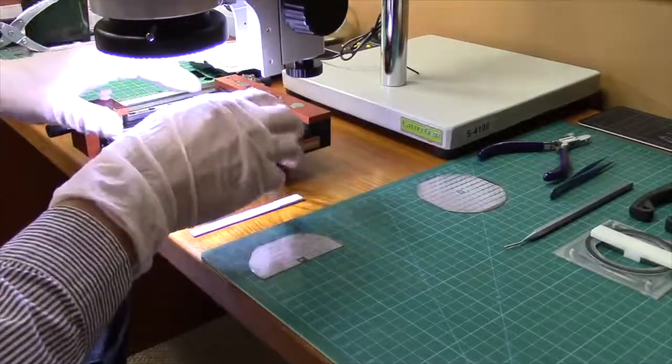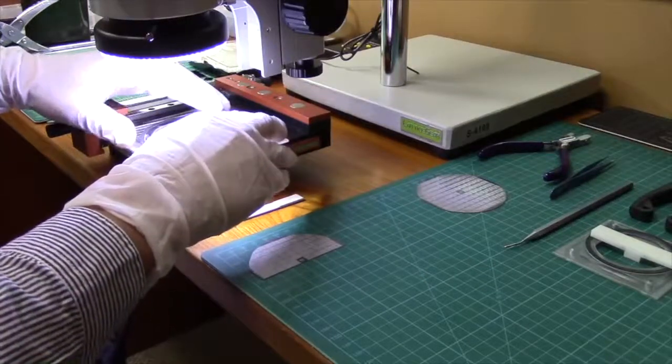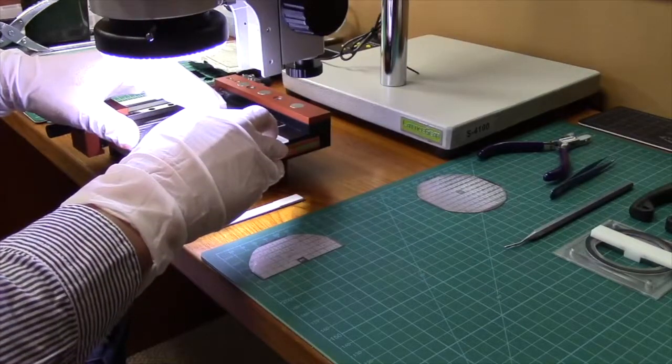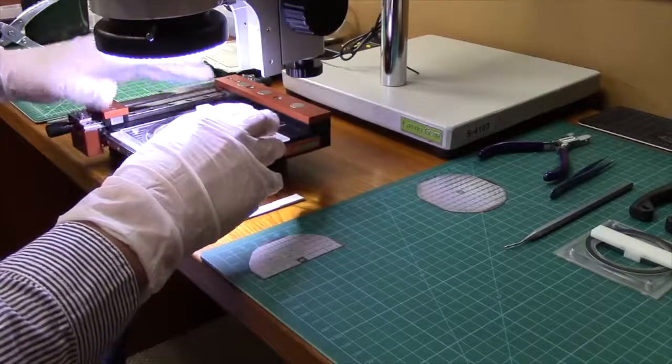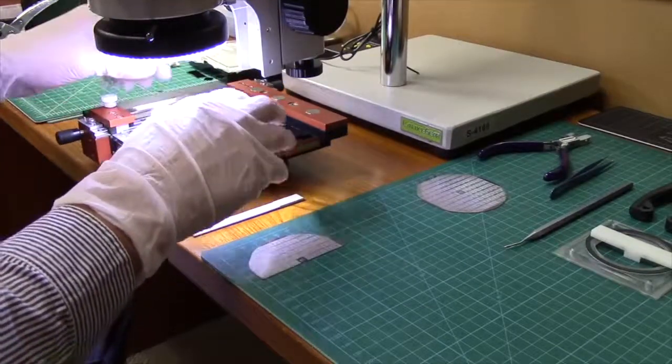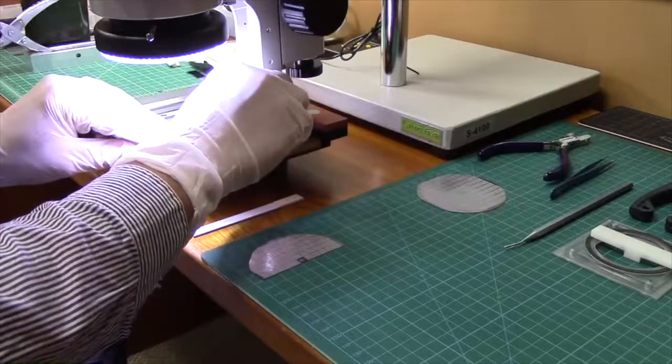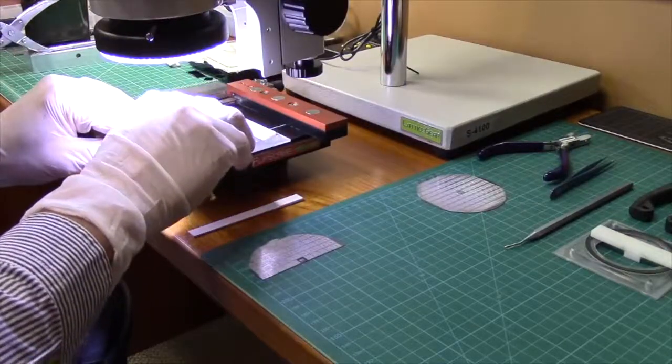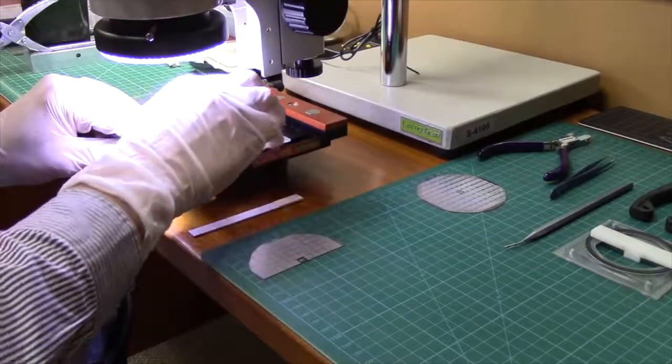Before placing a scribe on the wafer, the scribing tip should be cleaned and have the height and orientation set. A stereo microscope can help with this but is not necessary to use the Flip Scribe successfully.